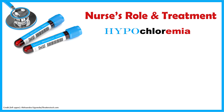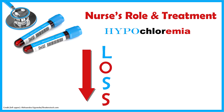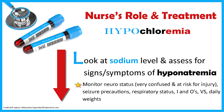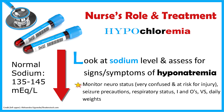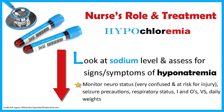Now let's look at the nurse's role in treatment for a patient with hypochloremia. To help remember, we'll use the word LOSS — because we have a loss of chloride in the blood. L is for look at the sodium level and assess for signs and symptoms of hyponatremia, because these two electrolytes copy each other. A normal sodium level is about 135 to 145 milliequivalents per liter, so anything less than 135 is hyponatremia. Monitor the patient's neuro status because if sodium drops too low, patients can become very confused and are at risk for injury. This can be due to swelling in the brain — when electrolyte levels drop outside the cell, water rushes into the cell, causing those cells to swell.